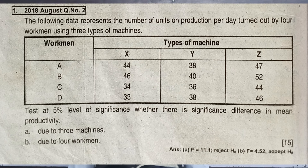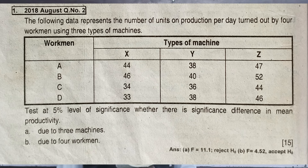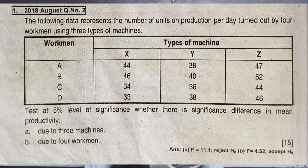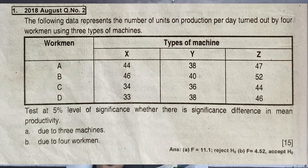The following data represents the number of units of production per day, turned out by four workmen using three types of machines. Workmen are A, B, C, D and machines are X, Y, Z. Workman A with machine X is 44, with machine Y is 38, and with machine Z is 47.